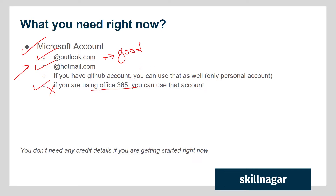If you don't have an Outlook or Hotmail address and don't want to use your company account, you can use the 'Login with GitHub' feature to create your account and get started with Azure DevOps. One important thing to mention: this GitHub login feature is only available for personal accounts, not for creating a company account. Since we are doing this for learning purposes, we don't have to worry about that.